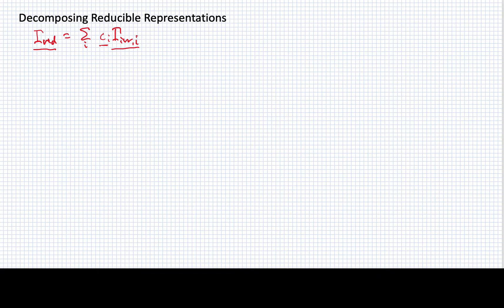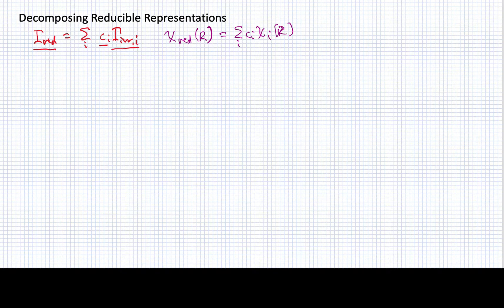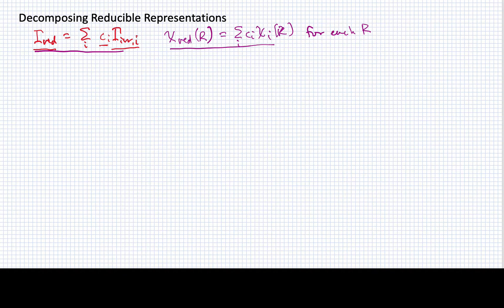When we have this, it must be true for each of the various symmetry operations that the character for the reducible representation can be written as a sum of the characters of the various irreducible representations. So we must have this for each r, and what I want to do is figure out how we go from this statement to determining what these various coefficients c must be.